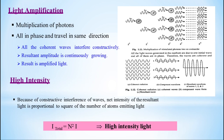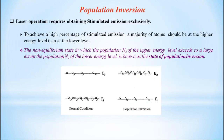Therefore, total intensity is equal to n² × i, where n represents the number of atoms. Total intensity is proportional to the square of the total number of atoms and their intensities. The necessary condition for laser to occur is population inversion. Laser operation requires obtaining stimulated emission exclusively. To achieve a high percentage of stimulated emission, majority of atoms should be at the excited energy level than at the ground energy level.